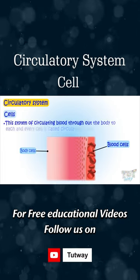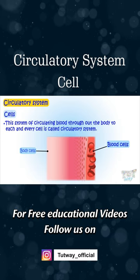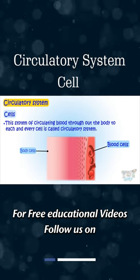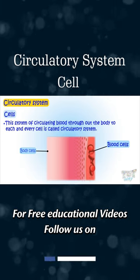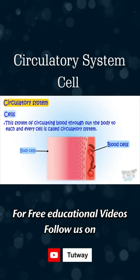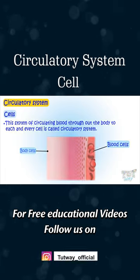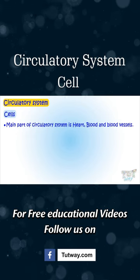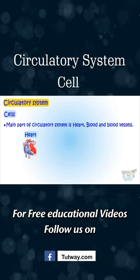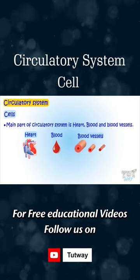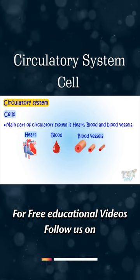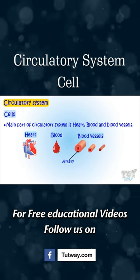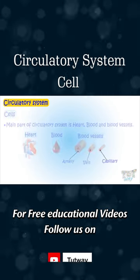This system of circulating blood throughout the body to each and every cell is called the circulatory system. The main parts of this circulatory system are the heart, blood, and the vessels. Vessels can be arteries, veins, or capillaries.